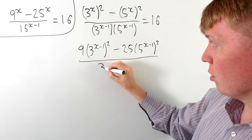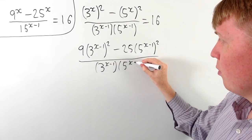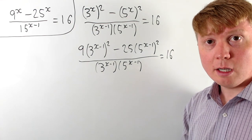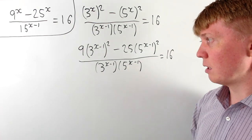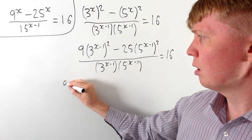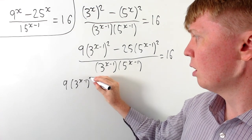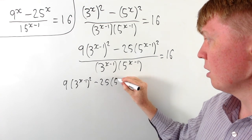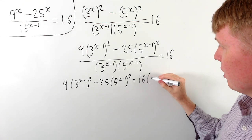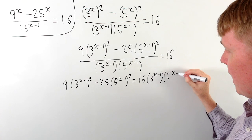We leave the denominator alone, and we see lots of similar-looking terms: 3 to the x minus 1, 5 to the x minus 1, and this is still equal to 16. So now let's multiply through by the denominator, 3 to the x minus 1 times 5 to the x minus 1, to get rid of the fraction. On the left-hand side we've got 9 times 3 to the x minus 1 all squared, minus 25 times 5 to the x minus 1 all squared, and this equals 16 times 3 to the x minus 1 times 5 to the x minus 1.